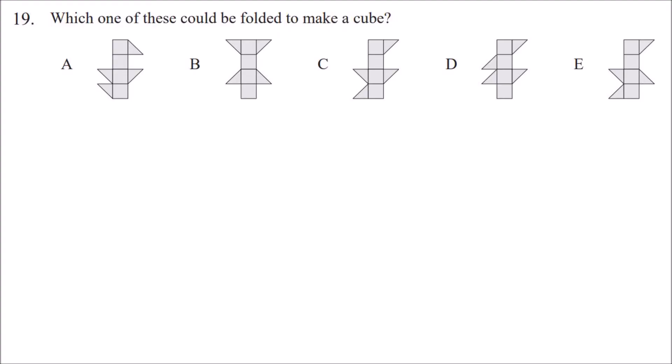Hello, today I'm going to be explaining question 19 from the UKMT Junior Math Challenge 2018. To solve this question, the two triangles on each side have to both make a square face of the cube.